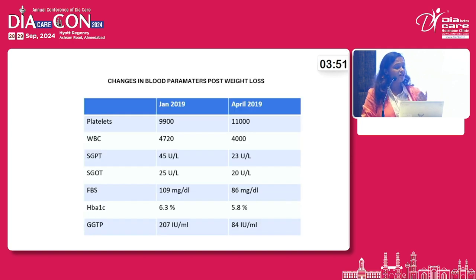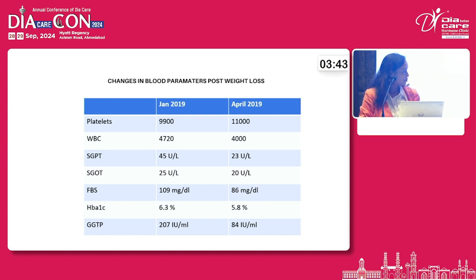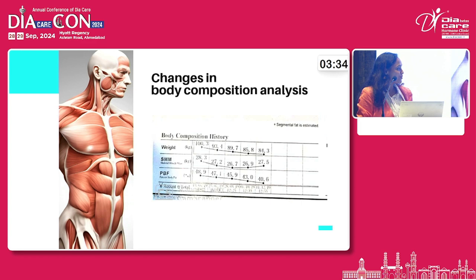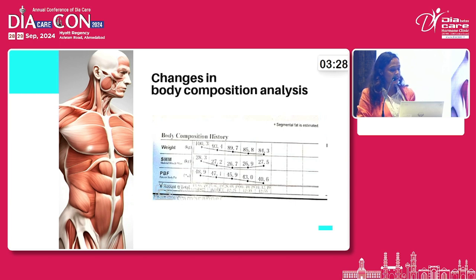With the weight loss, blood parameters improved — fasting glucose levels dropped, HbA1c improved, and liver enzymes also improved, with GGT dropping from 207 to 84. Muscle strength also increased. We do body composition analysis in all our patients, and the results showed that the patient did not lose muscle but dropped fat while gaining muscle.